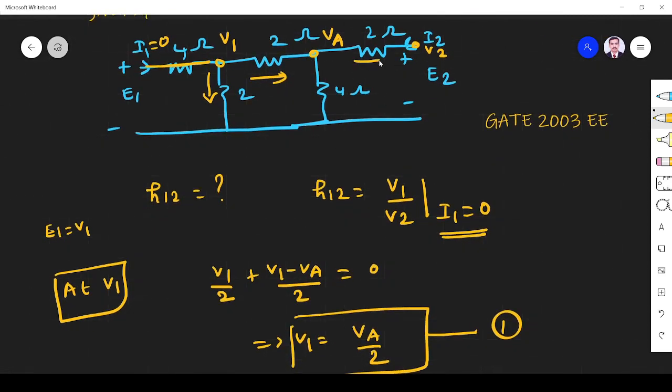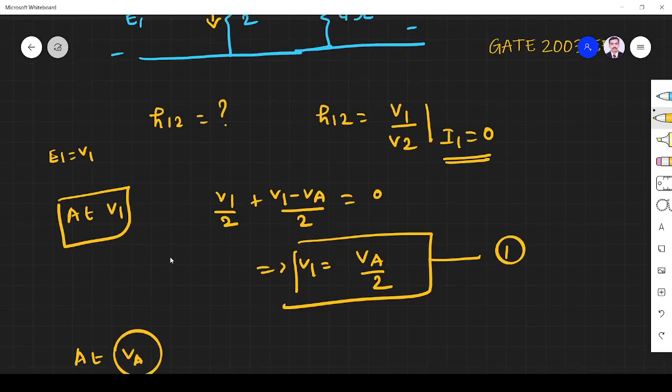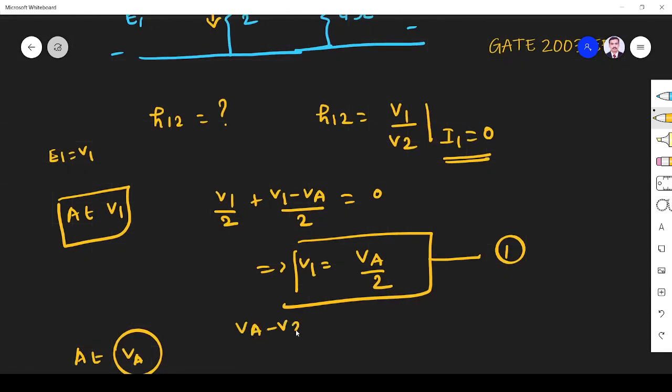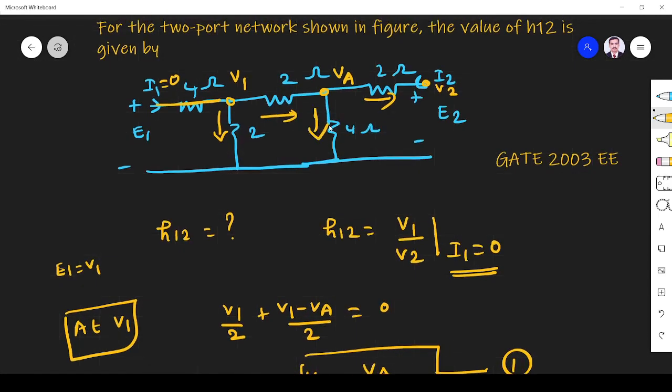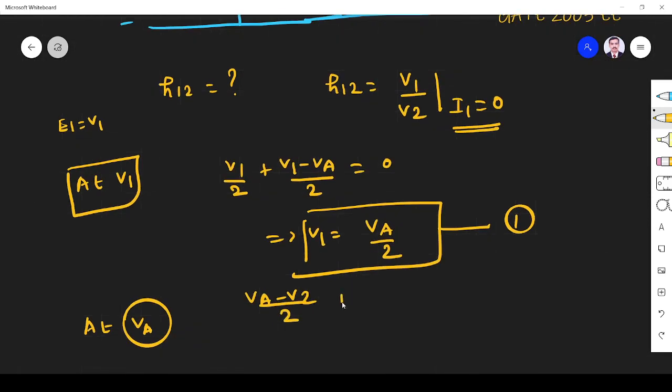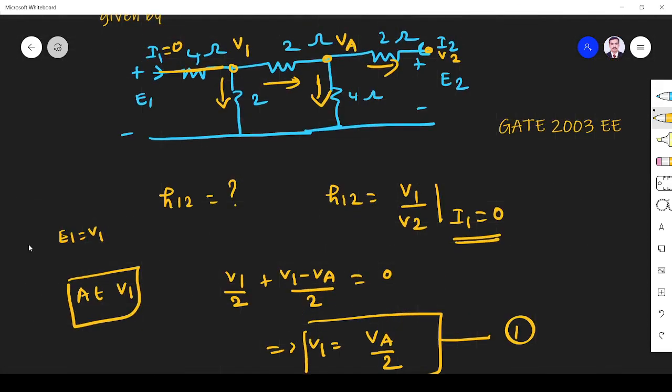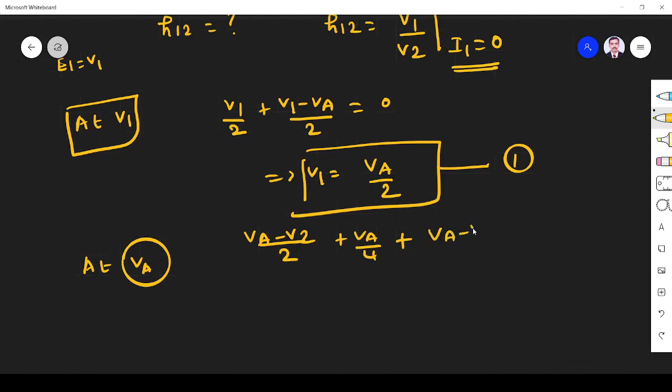For this branch I write va minus v2 by 2. Next I write va minus v1 by 2. So va minus v2 by 2 plus va minus v1 by 2 is equal to 0. This implies if I take va outside, va times 5 by 4 equals v2 by 2 plus v1 by 2.